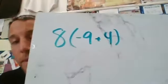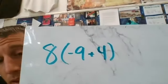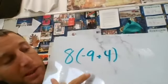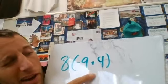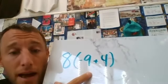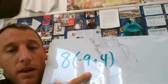So let's say we have eight times the quantity negative nine plus four. So now PEMDAS does tell me I have to do what's in parentheses first, which is true. And I can do that. I get negative nine plus four, which would be negative five. Negative five times eight. I know that this is going to equal negative 40.